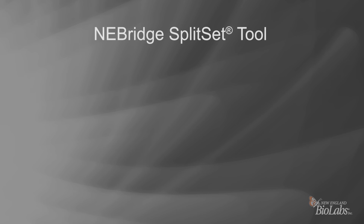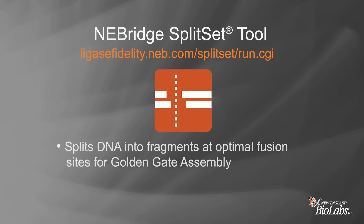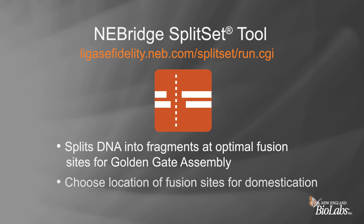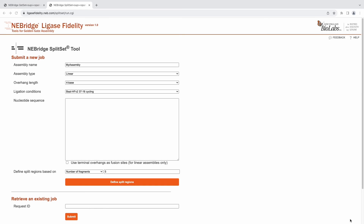The NEBridge Split Set tool splits a gene or other DNA sequence into multiple fragments at optimized fusion sites, enabling scarless, high-fidelity assembly. It permits fusion sites to be limited to specific regions or precise locations. The tool can also assist in selection of fusion sites appropriate for making mutations, including domestication, by incorporation of desired mutations into primers.